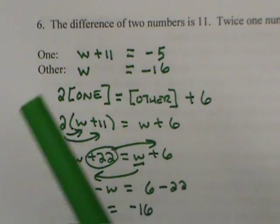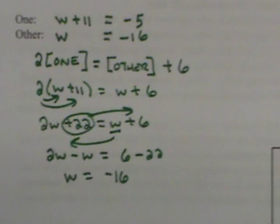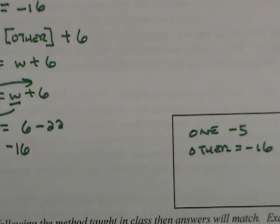With the sum problems, it doesn't matter. That's a student choice. And I believe I did mention that when we went over the introduction to number problems. Once again, our answers here were negative five and negative 16.